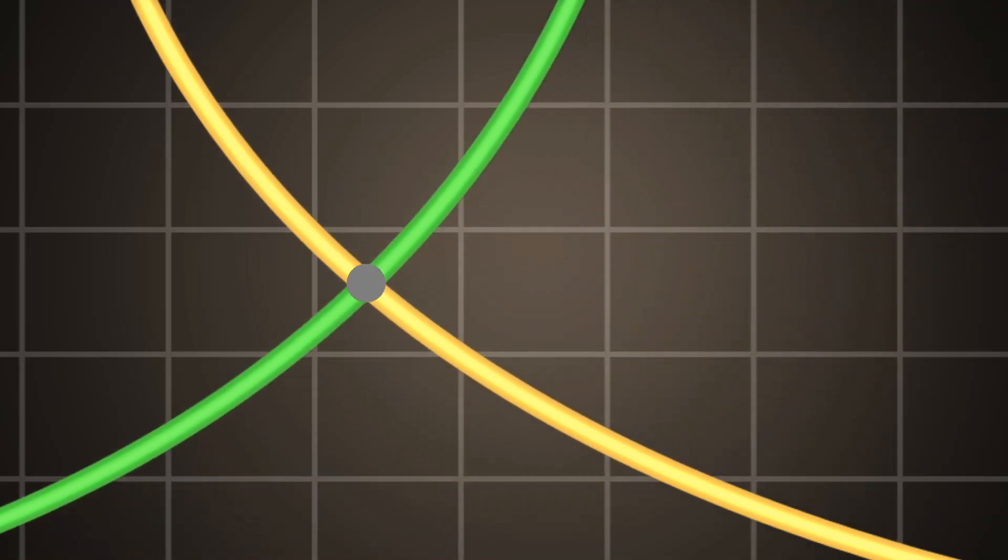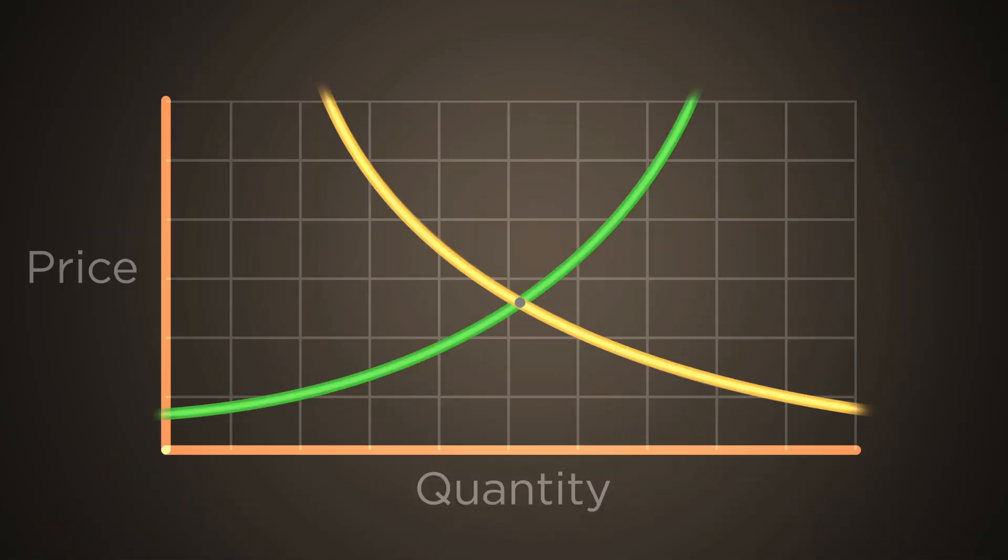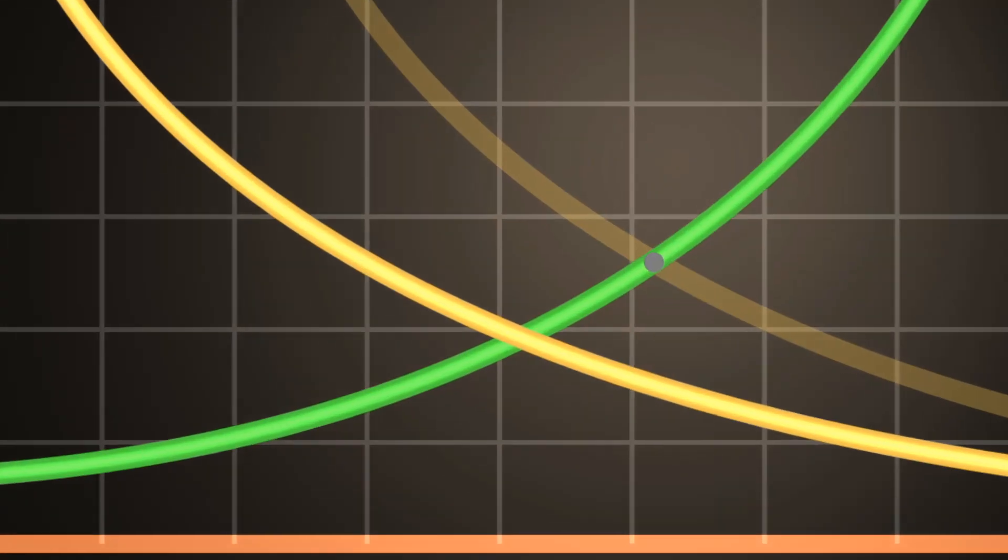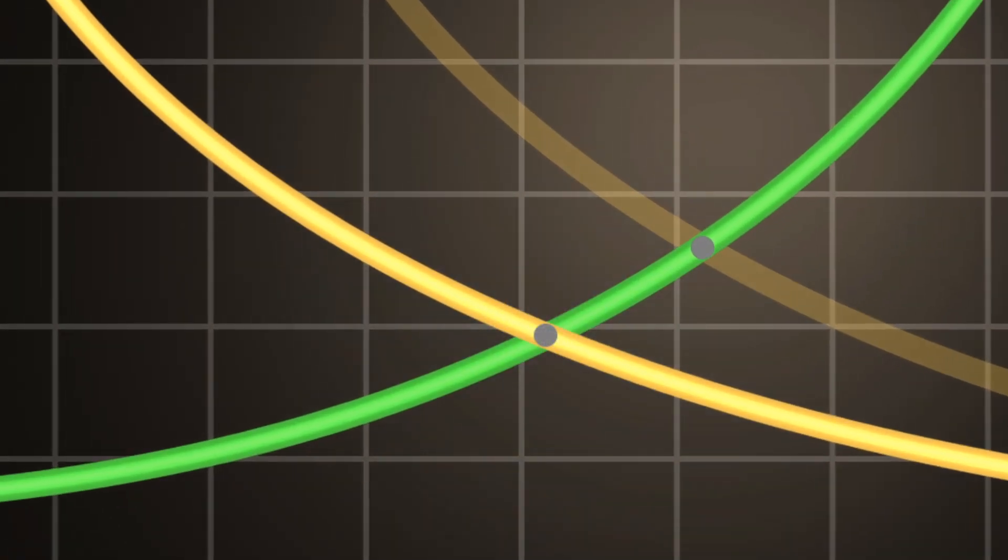But they tend toward and eventually settle at equilibrium. Imagine a market in transition where the demand for widgets has suddenly decreased, but the market price has not yet settled to the new equilibrium. Suppliers will continue to respond to the market price, which is now too high, while consumers have decreased the quantity they demand. This means suppliers will produce a greater quantity than consumers are willing to purchase, resulting in a surplus. The surplus puts downward pressure on the market price, which causes it to drop back toward the equilibrium price.